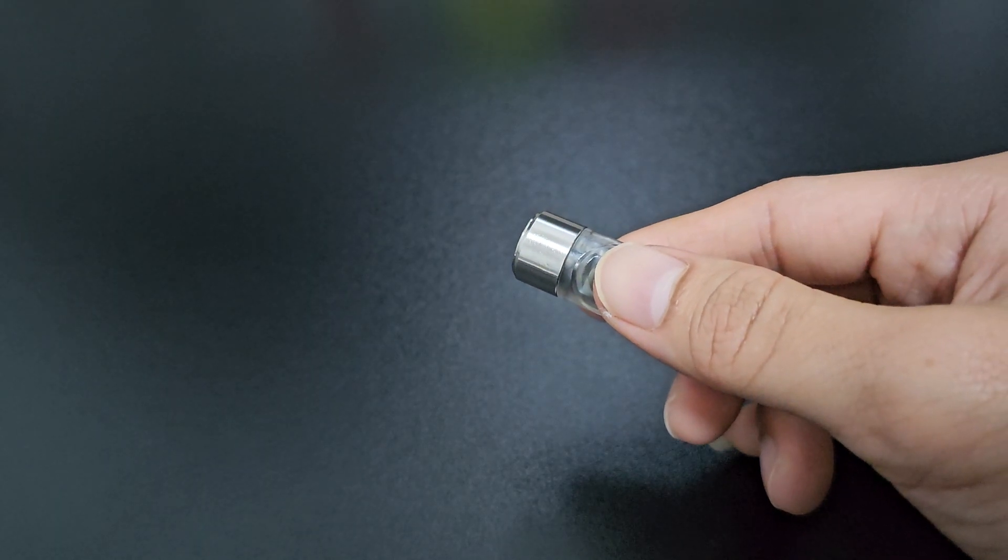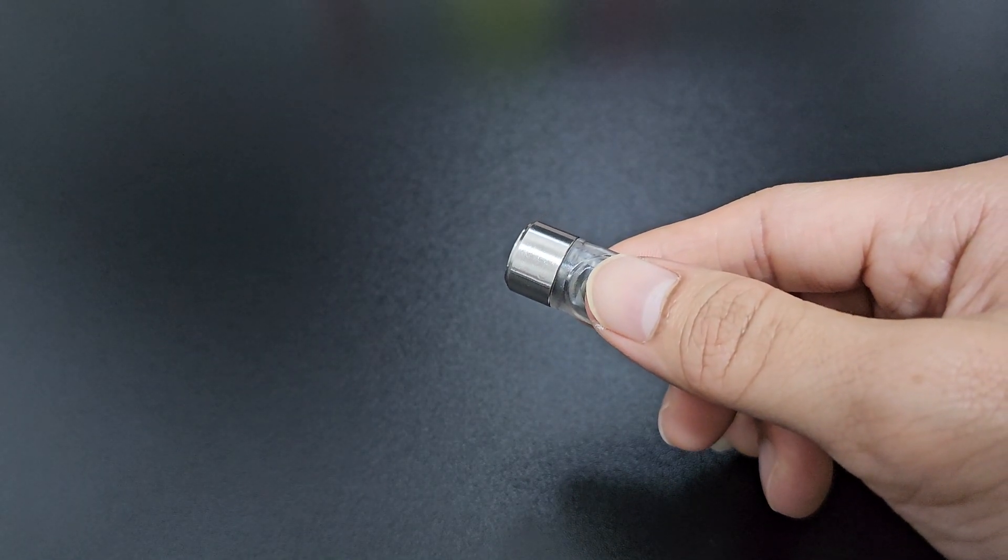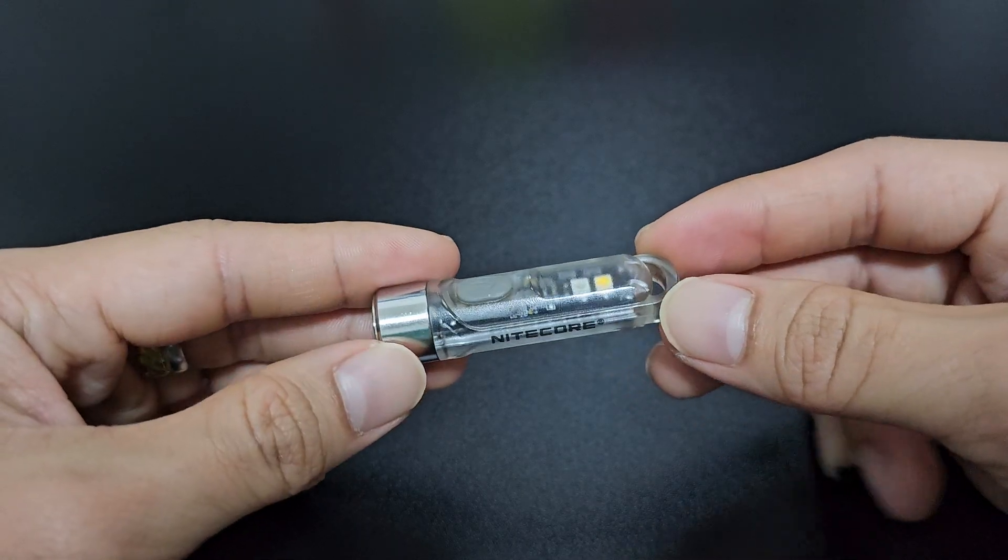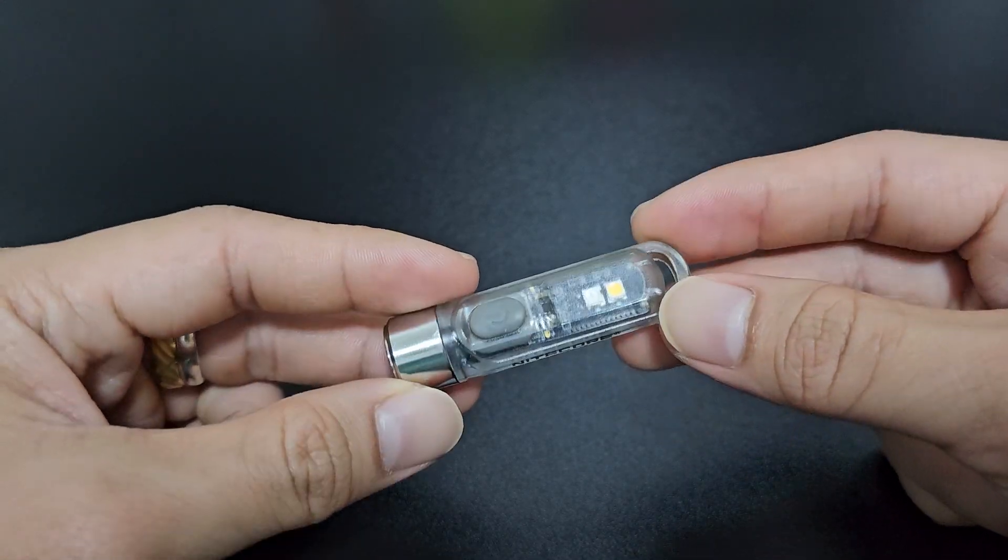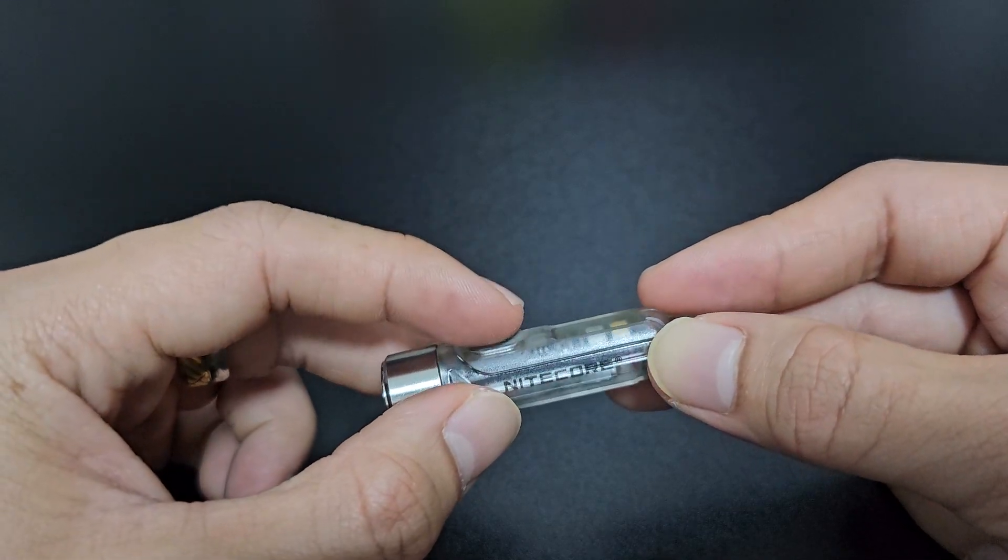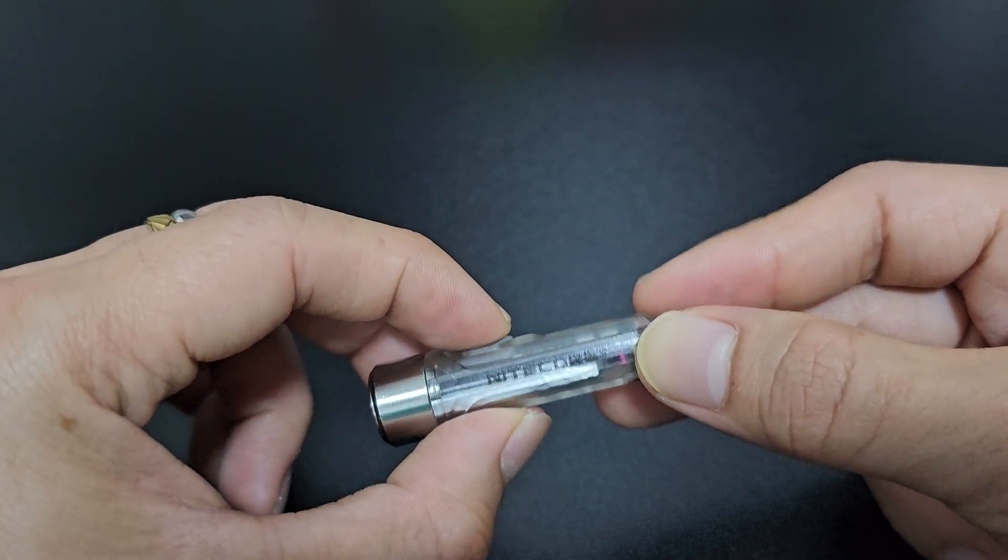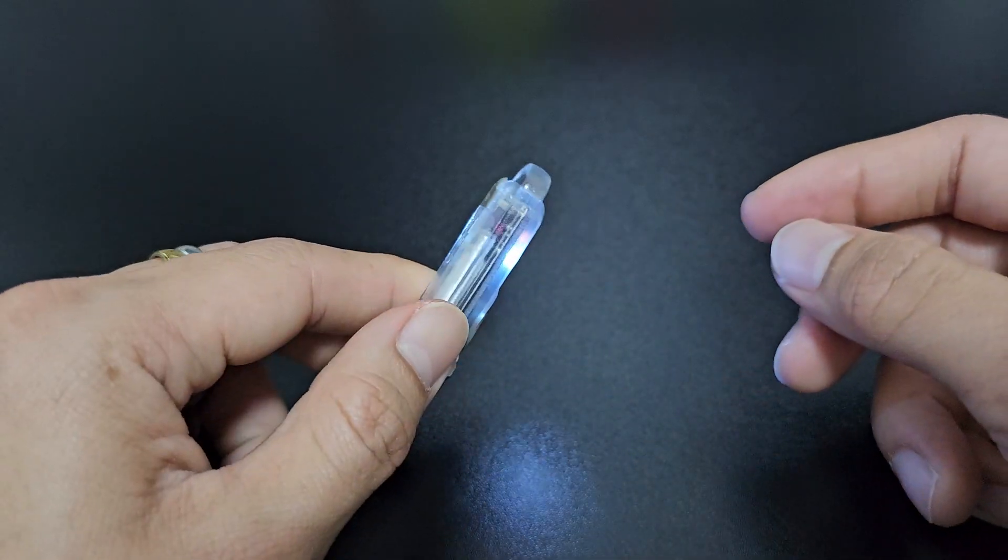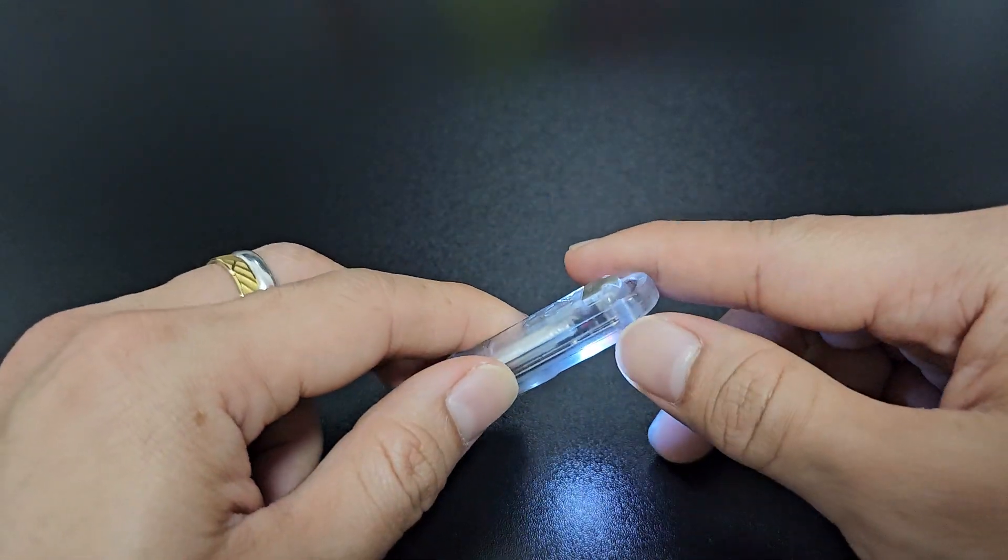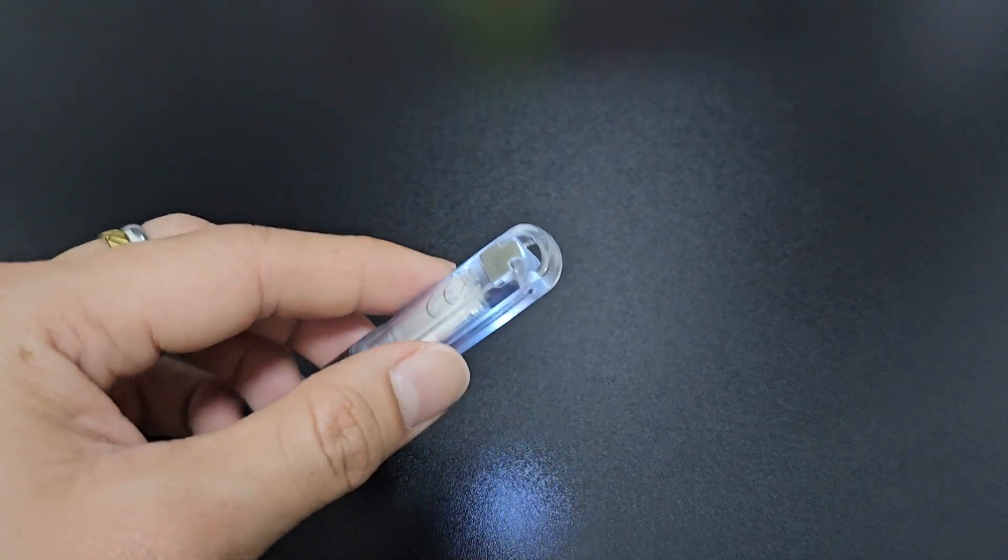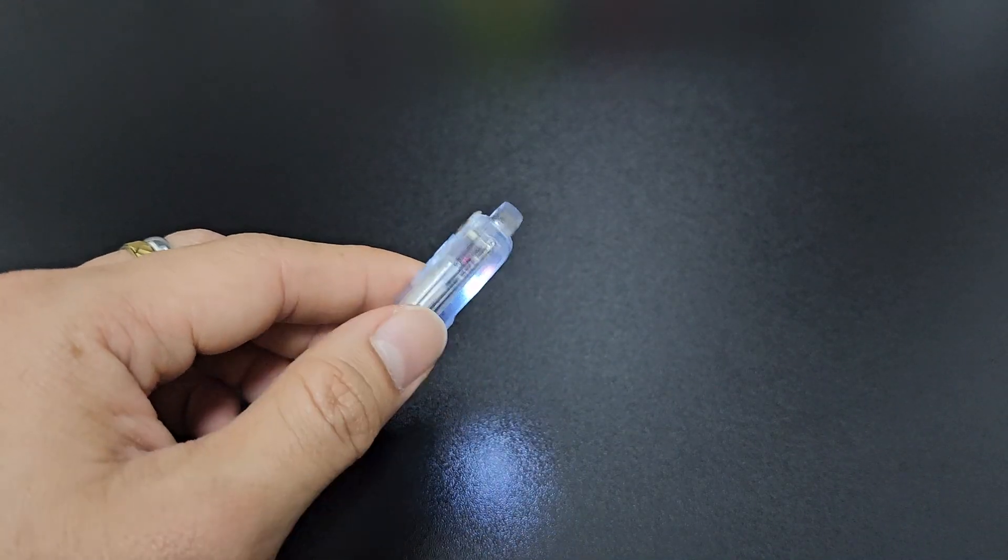Now I'm going to show you some of the other functions of this light. This light actually has a UV function. In order to activate that, we have to do a triple press over here. So I'm going to show you now. So once you have triple pressed, you will activate the UV function. So this UV function is useful if you want to check for counterfeit notes.